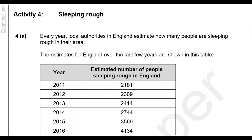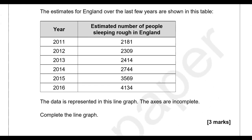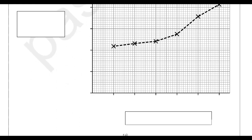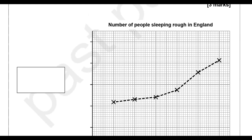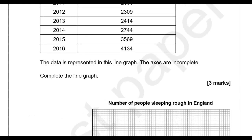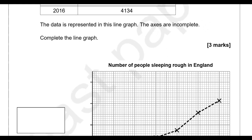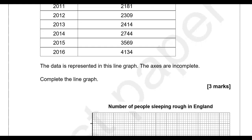Activity 4: Sleeping rough. Every year local authorities in England estimate how many people are sleeping rough in their area. The estimates for England over the last few years are shown in a table, and the data is represented in a line graph with incomplete axes. Complete the line graph by labelling the axes — years from 2011 to 2016 go horizontally, and the estimated number of people goes vertically.